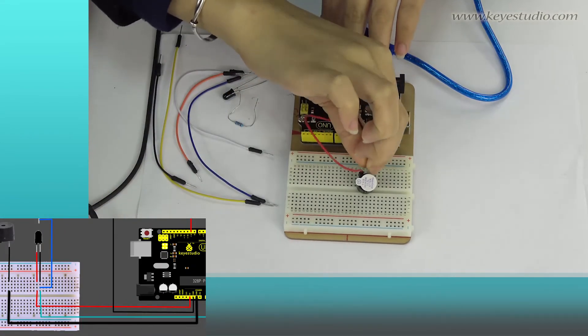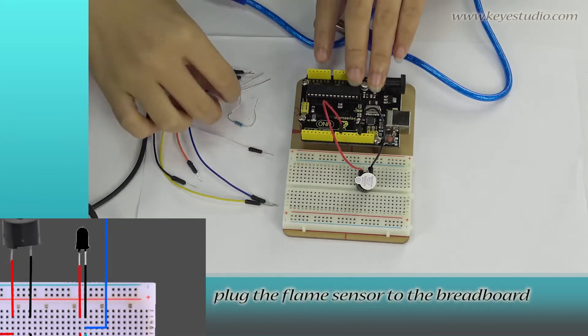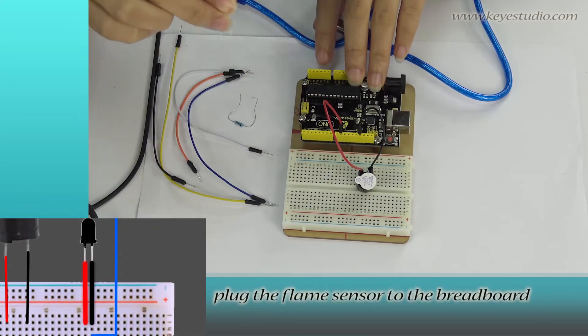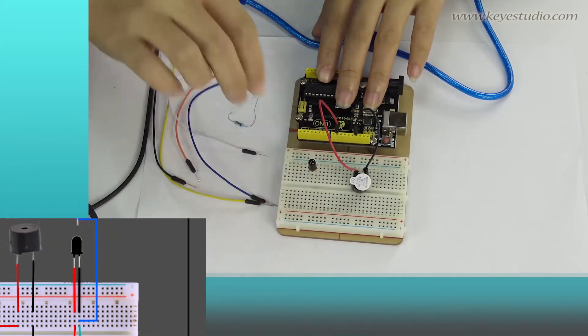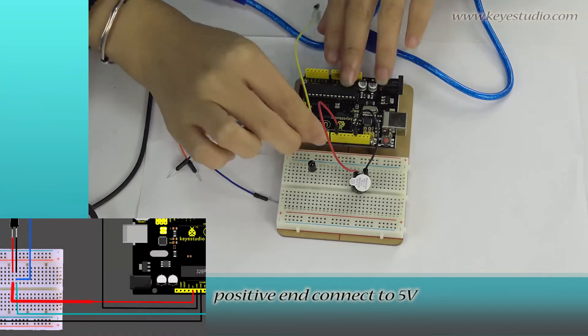Next, plug the flame sensor to the breadboard. Positive end connect to 5V.